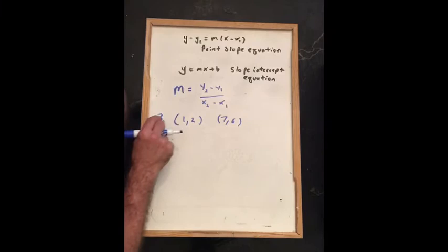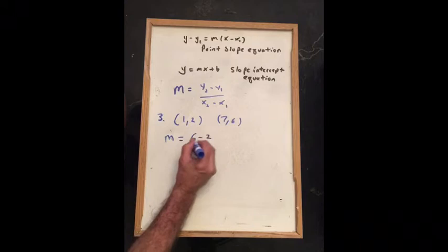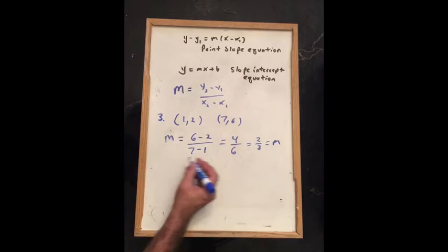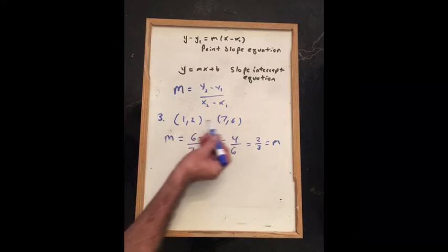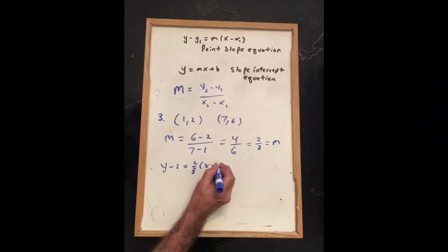For problem 3, we add in the slope formula: y2 minus y1 over x2 minus x1. We're given two points: (1, 2) and (7, 6). First we find m by saying 6 subtract 2 divided by 7 subtract 1, which becomes 4 divided by 6, reducing to 2 thirds. Now we take this m and put it into the point-slope equation using the first point, writing y minus 2 equals 2 thirds times x minus 1.